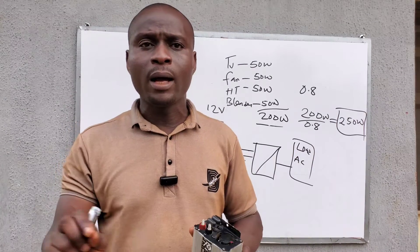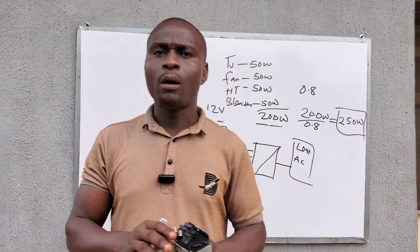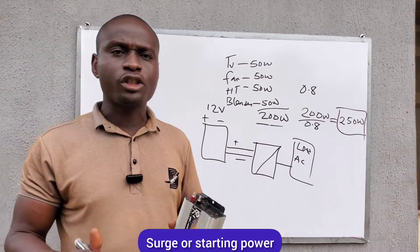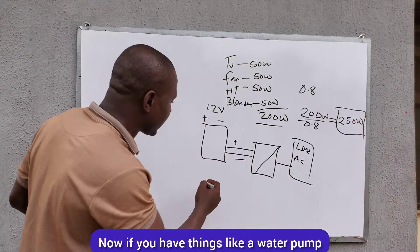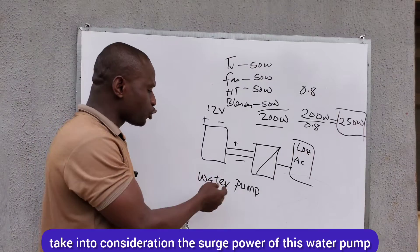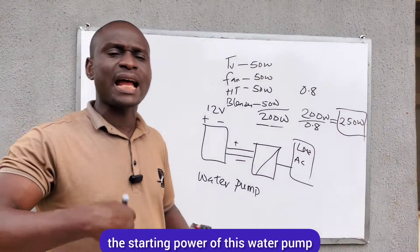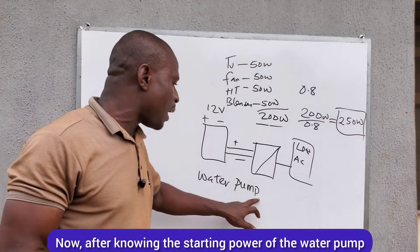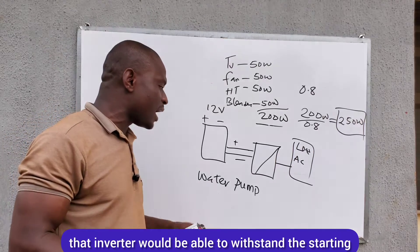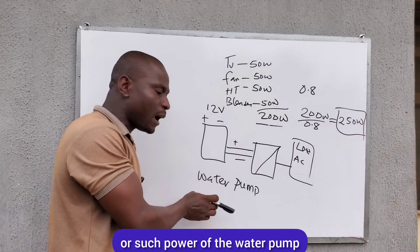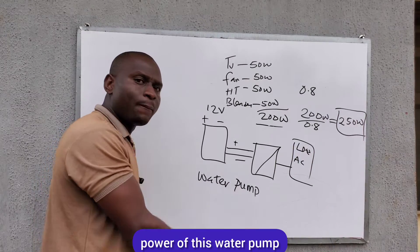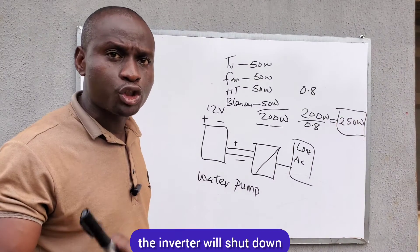Another thing to consider is surge, or starting power. If you have a water pump, you need to take into account the surge power — the starting power of that pump. After knowing the starting power, check the surge rating of the inverter to see if it can withstand the starting power of the water pump. If the surge power rating of the inverter cannot withstand the starting power of the pump, the inverter will shut down when you connect the pump.